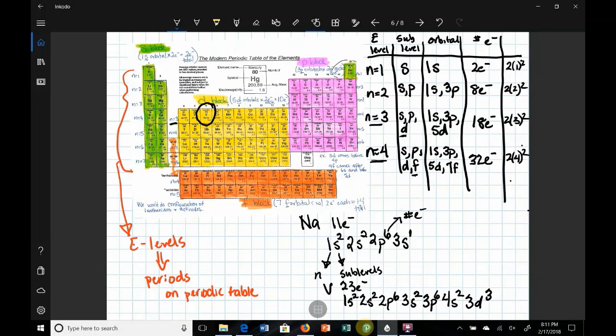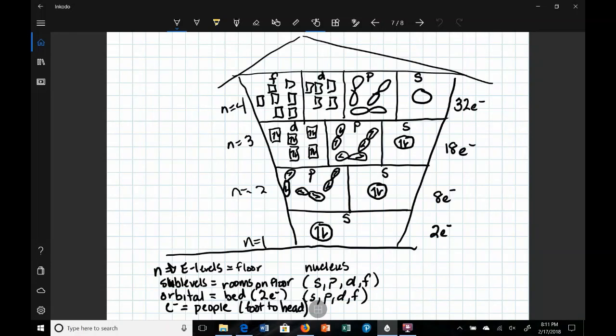Now why this is, is because the 4s electrons have a little bit less energy than 3d electrons. If we think about it, let's go back to our house. Let's think about our house. If you were filling up the house with guests, you would rather that guests be filled in each bed one at a time until the beds get full.